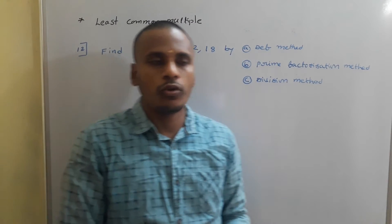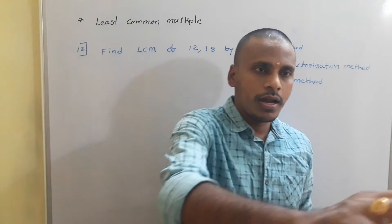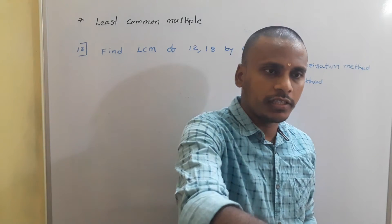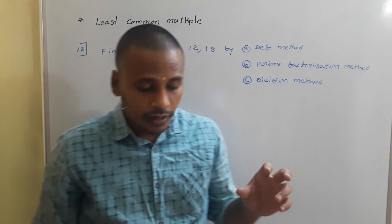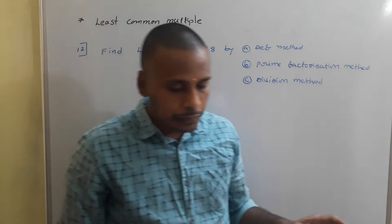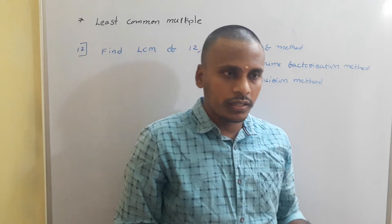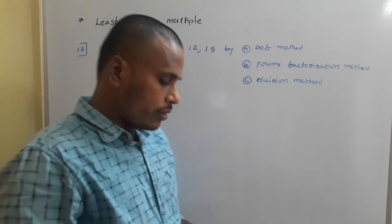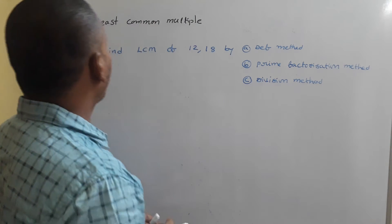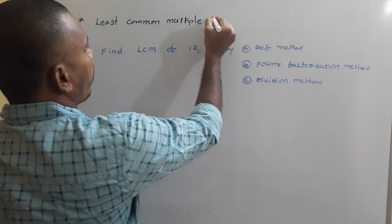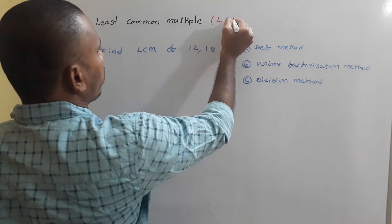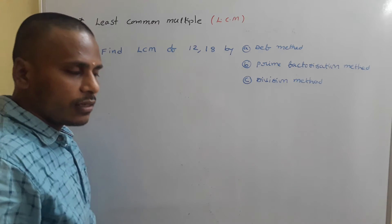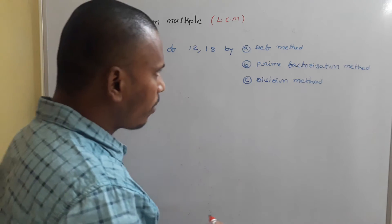In the last class we learned about HCF and different methods to find HCF of given numbers and different standard types related to HCF. Now in this class it is completely about least common multiple, which is simply written as LCM.